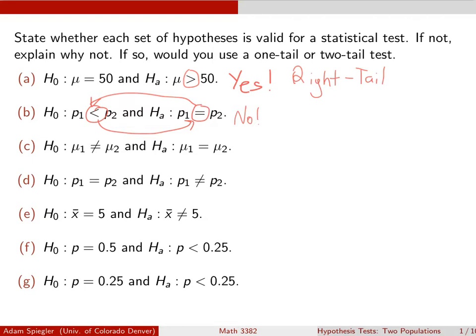And looking at part C, we have the same problem here. Now we're comparing two means, and the null hypothesis has an inequality in it, which is incorrect. The alternative hypothesis has an equality, which is also incorrect. And if we were to switch them, then that would be a valid hypothesis. But they've got these inequality symbols set up in the wrong hypotheses.